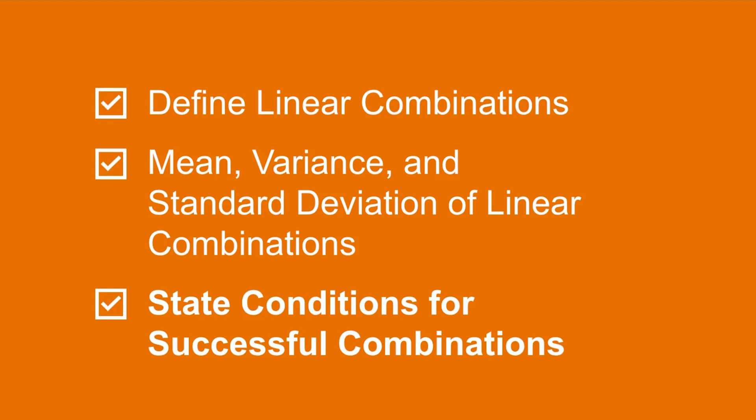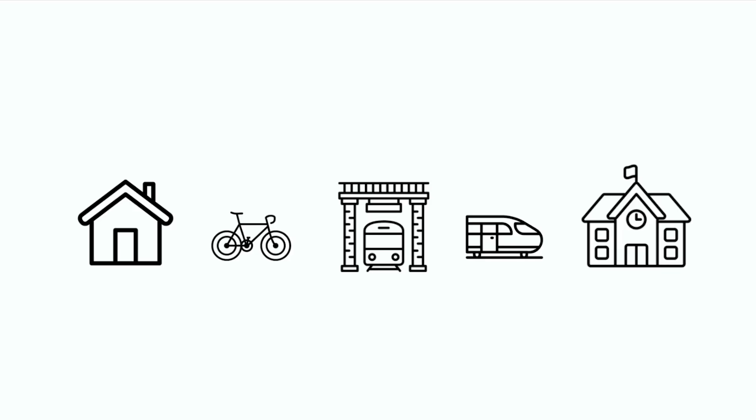Let's begin by thinking about when being able to combine random variables may be useful. Let's say that on the way to school you have to bike from home to the train station, then take a train from the station to school. Sometimes you bike fast, sometimes you bike slow. Similarly, sometimes there is a delay on the train, sometimes there is not. You want to know how early you need to leave home to be very sure that you won't be late to school.